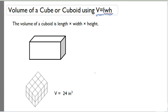The volume of a cuboid is length times width times height. That means if we find the length here, the width here, and the height of the cuboid here, and multiply the three dimensions together, we'll get the volume.